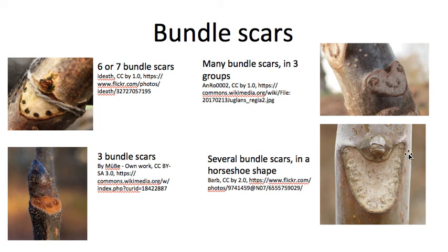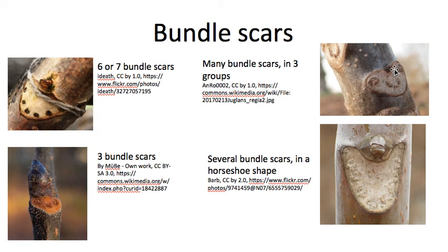This is about the clearest illustration of bundle scars I've ever seen — I've never in my life seen a twig this clear. Usually it takes a little bit of imagination. A good example requiring imagination is this Tree of Heaven twig, where there are approximately 10 to 12 bundle scars — some of them are hard to tell apart. And then this is one of the weirdest twigs: Black Walnut has three groups of bundle scars, but within each group there are maybe eight or so individual bundle scars, with several in each group. So if your key says three groups and many, see if it resembles this.